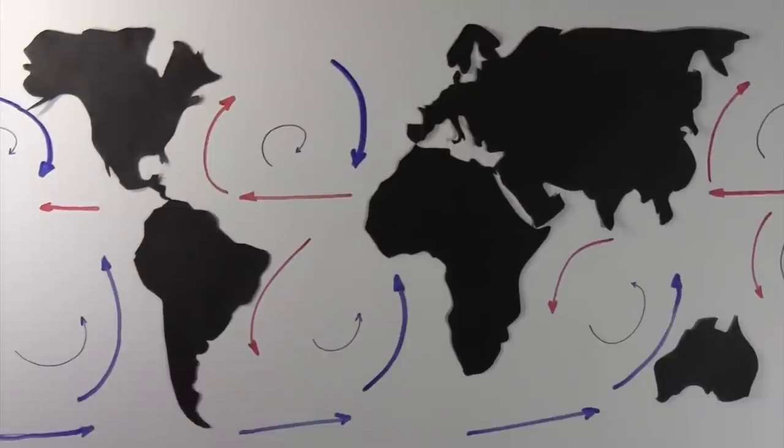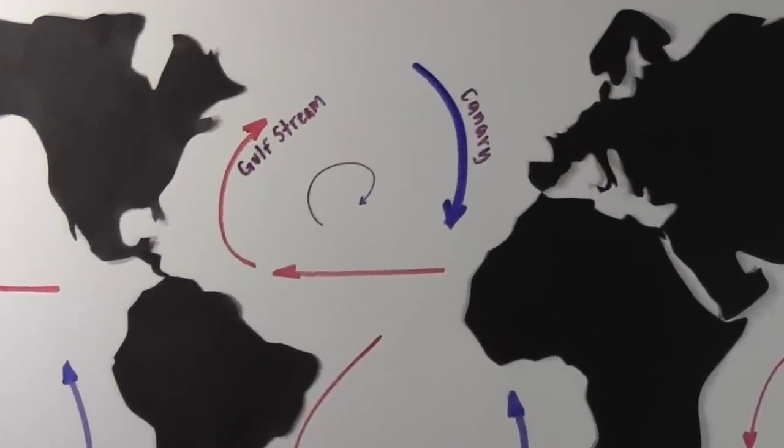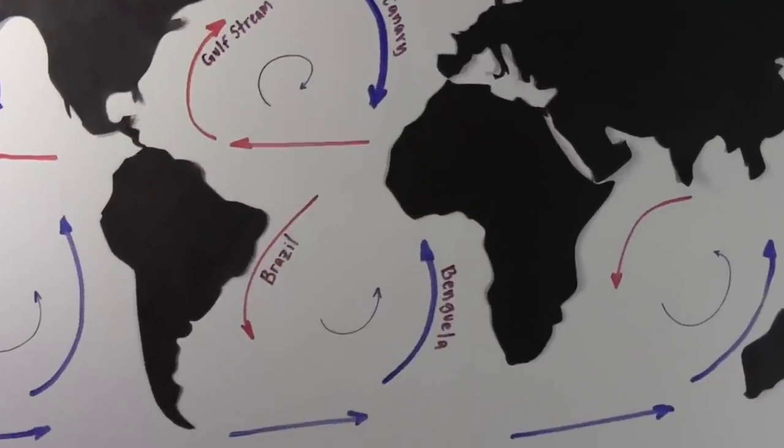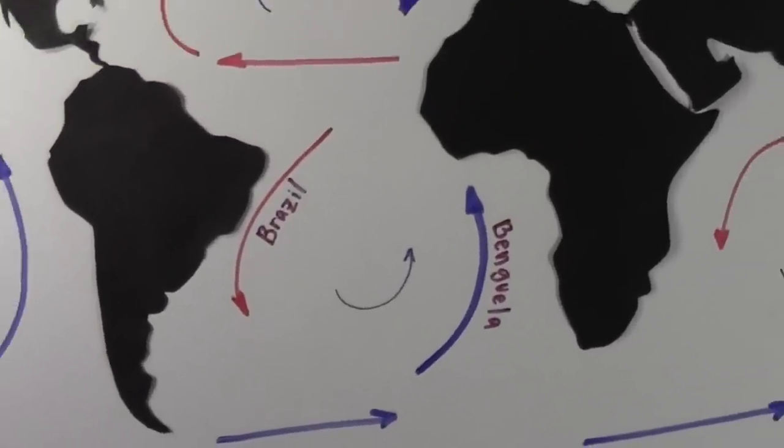Here are the five major gyres. The northern Atlantic contains the Gulf Stream and the Canary Current. The southern Atlantic contains the Brazil Current and the Benguela Current.